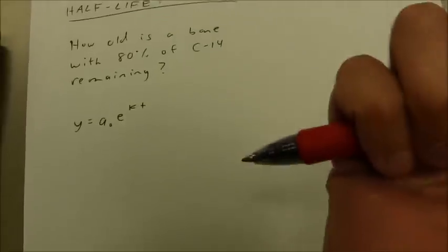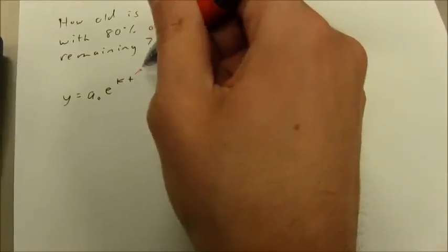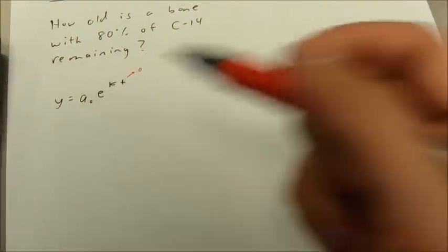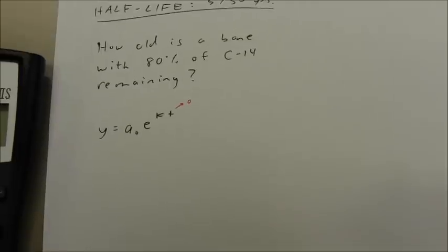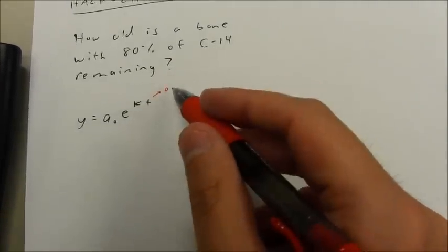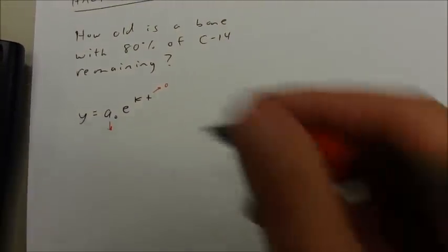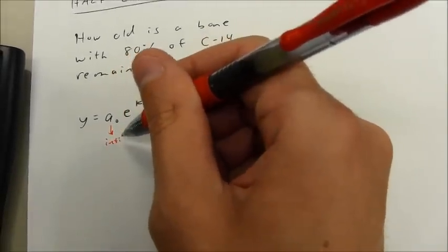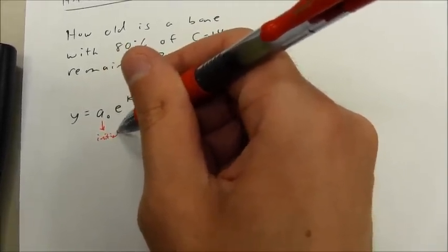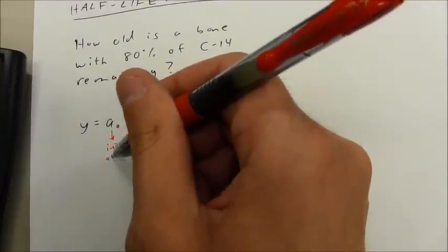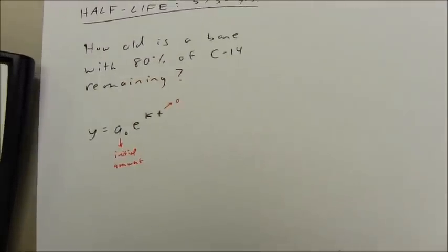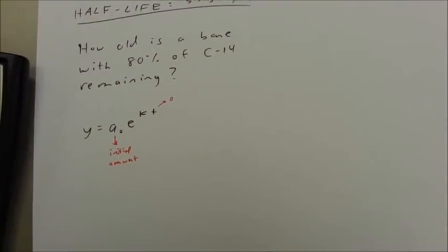For example, if you look at this formula, when t is equal to 0, that's going to give you e to the 0 power, which of course is 1. Which means that when t is equal to 0, a-naught is just going to be the initial amount of carbon-14 that you have.